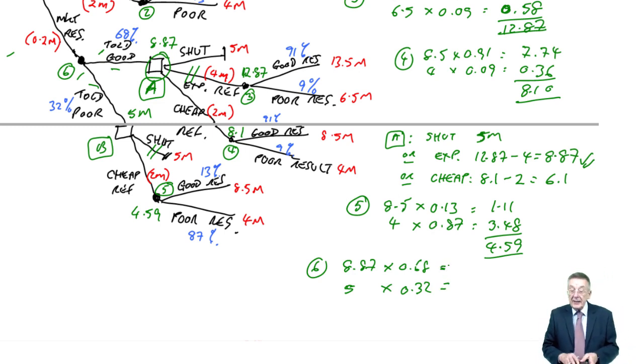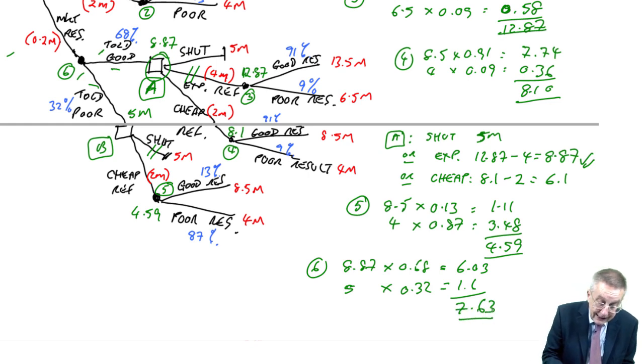And so the expected benefit of doing the market research, 6.03, 1.6 is 7.63. And all the later bits we can, for the moment, forget.